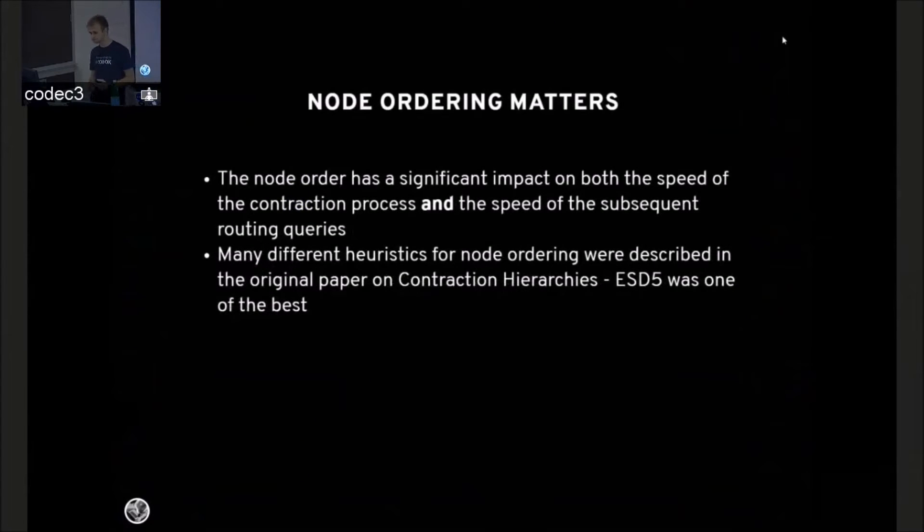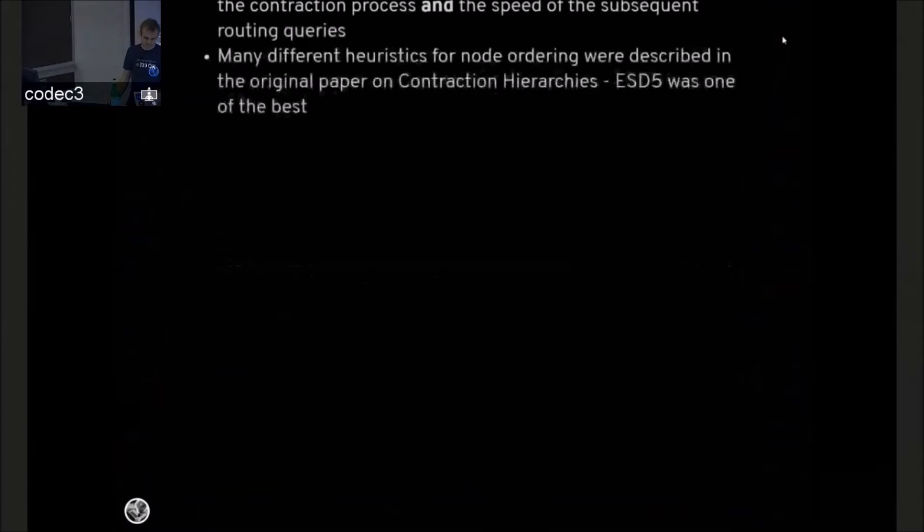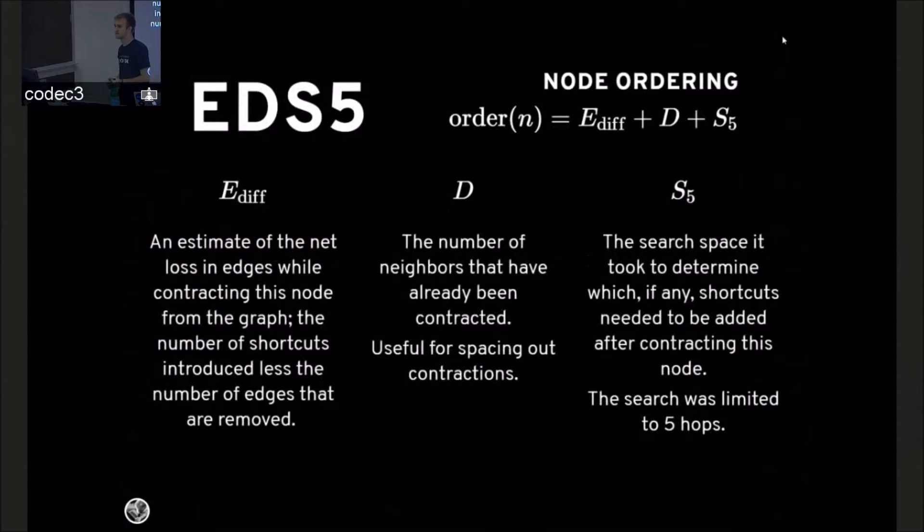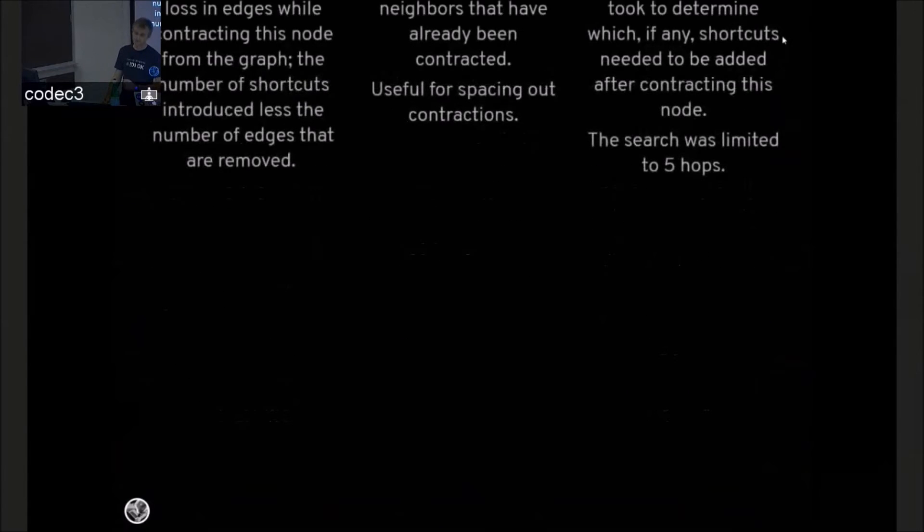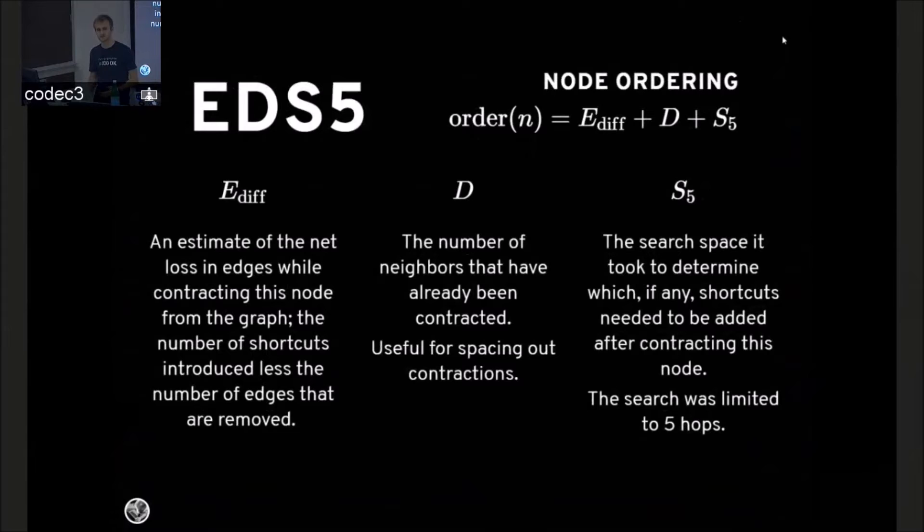But node ordering really matters. It can impact the contraction time and the routing time. And there's many different heuristics that are described in the original paper for sorting nodes, and they're very complicated. But one of the best is EDS-5. EDS-5 has three main terms, the biggest one is the edge difference. And all that is, is when you look at a node, it's how many shortcuts do I have to add versus how many edges do I get to remove. So you want to contract the ones that remove the most edges first. And there's also a term for how many of my neighbors have been contracted, so that two nodes that are close together don't get contracted back to back. And the final term is search space, which is a measure of how difficult it was to find an alternative path to replace the shortcut. And the 5 means that the search for alternative paths was limited to 5 hops to keep it quick.